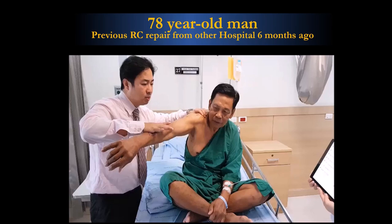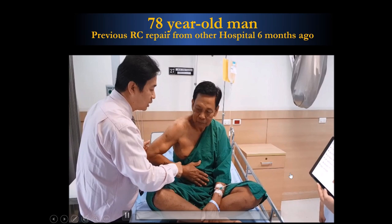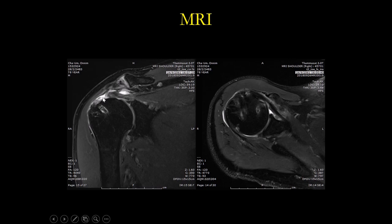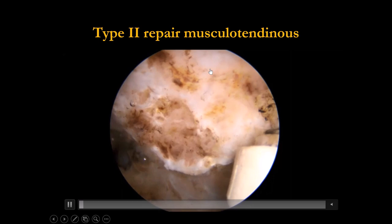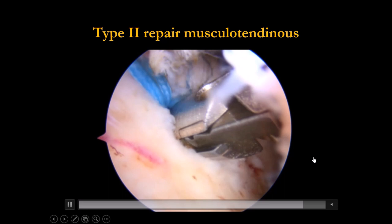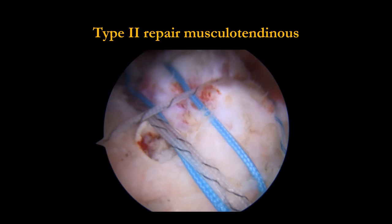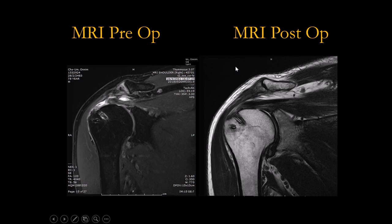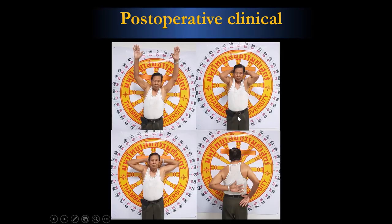Another patient referred from another hospital — a proximal tear with the footprint still intact, again a musculotendinous tear. The first surgeon also missed a large acromion spur. I decompressed the spur and revised the cuff again using the suture bridge technique. Luckily there was enough tissue to repair. This was a type 2 tear — I kept the stump, reduced it back in a more medialized fashion, and it healed nicely.